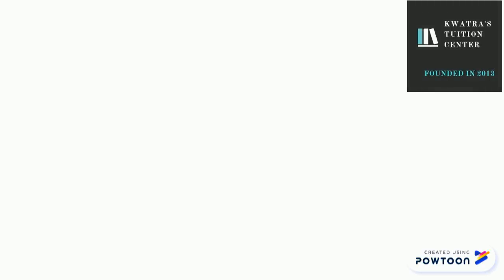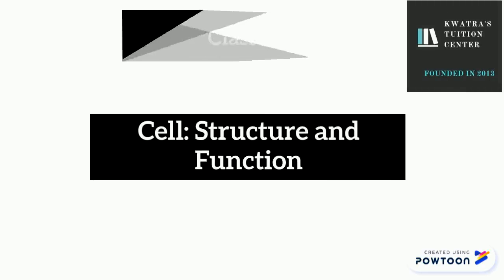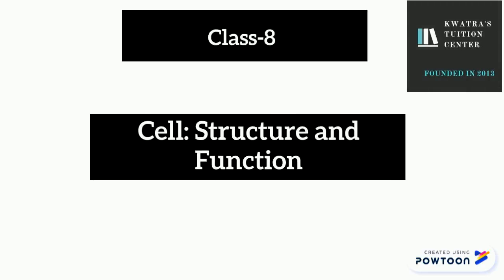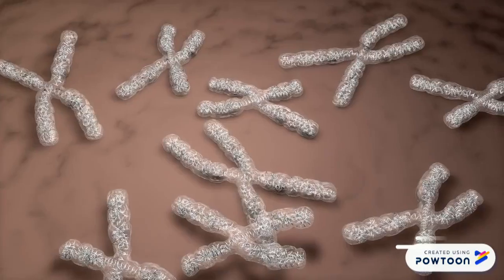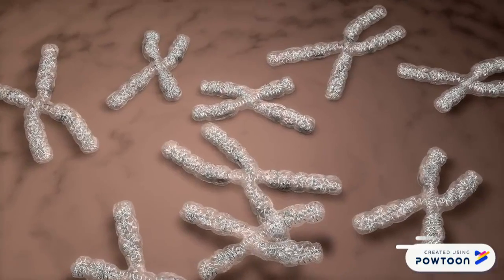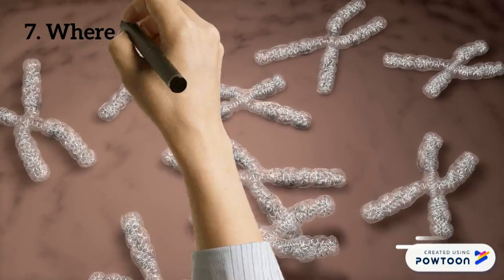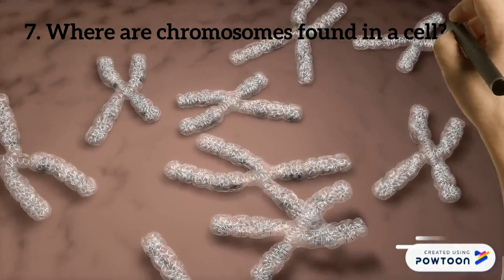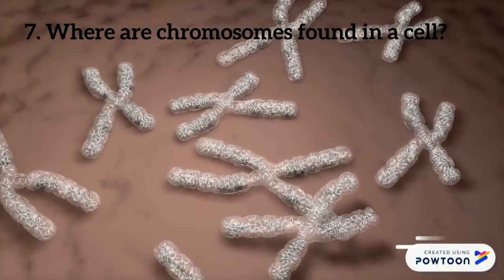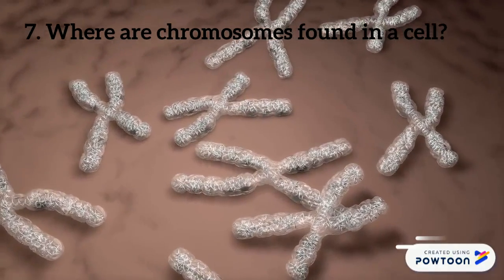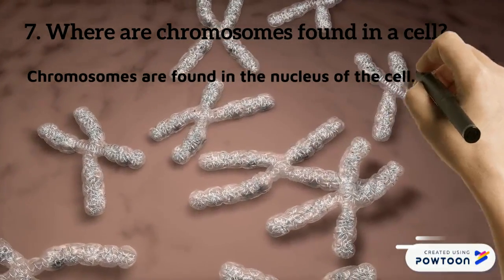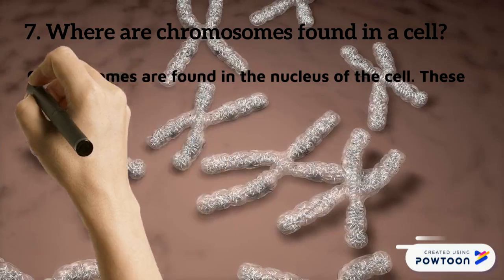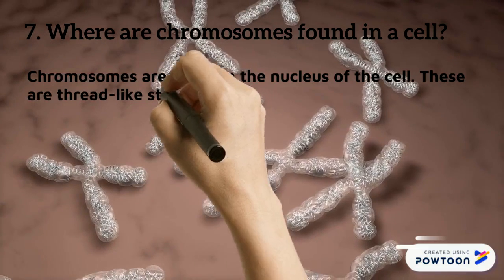Hello everyone, let's start with question number 7 of cell structure and function. Question number 7 says, where are chromosomes found in a cell? So in a cell, chromosomes are found in the nucleus of the cell, and these are thread-like structures that carry genes.